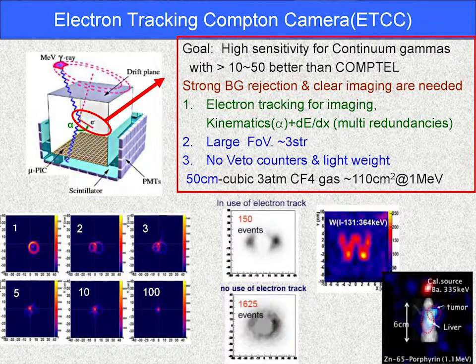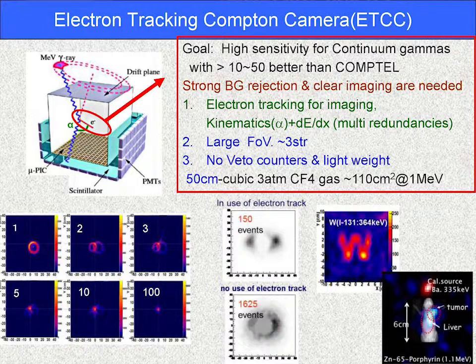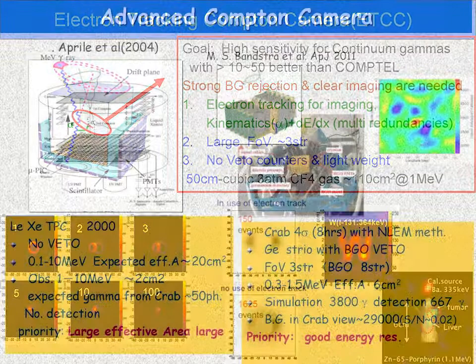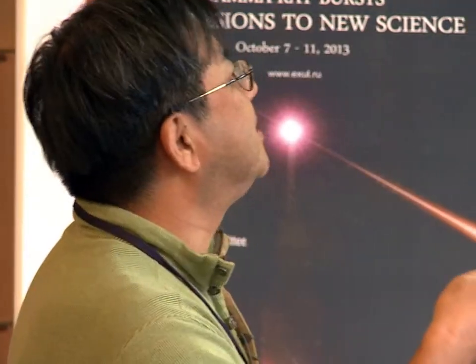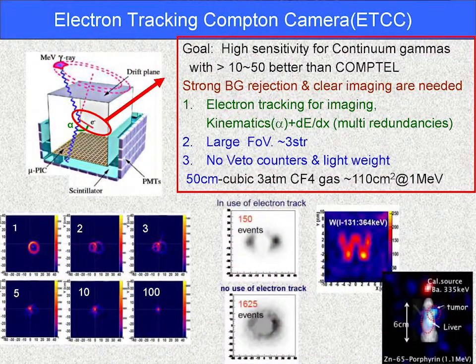Here we introduce a quite different type of Compton camera. Our key point is how to increase redundancy. Therefore, our detector measures all physical parameters in Compton scattering — in particular, the direction of recoil electrons and the energy loss rate of these recoil electrons. The liquid xenon detector could ideally also measure electron tracking, but it is a quite heavy material, and not so good for measuring low-energy electron direction. Therefore, we use gas and constructed a time-projection chamber.